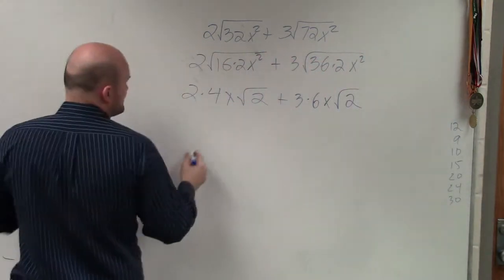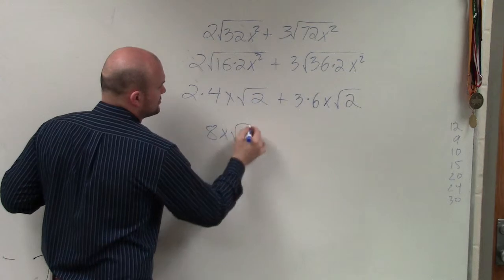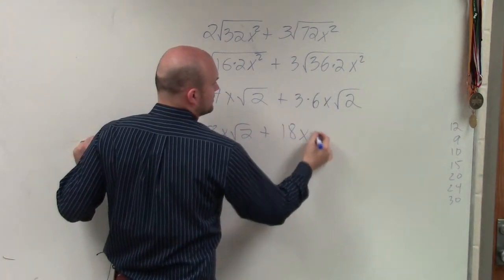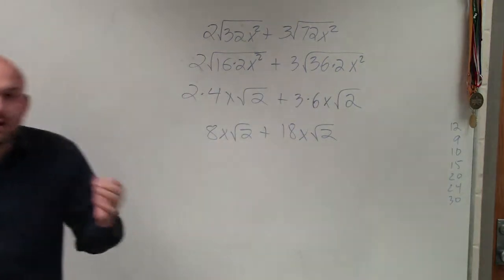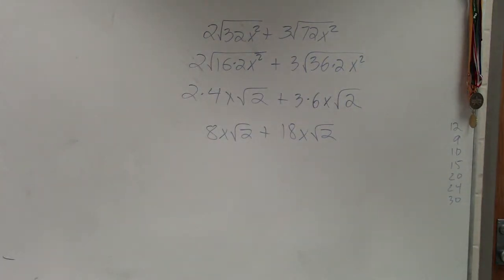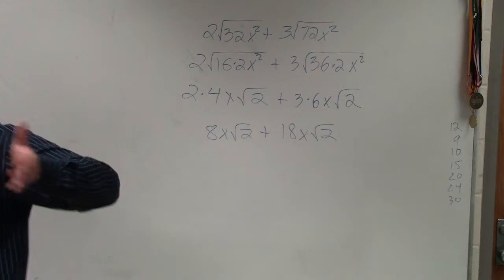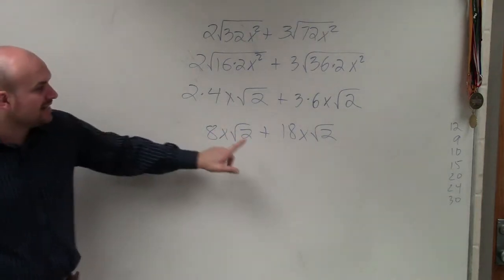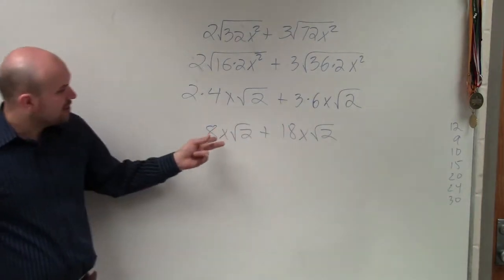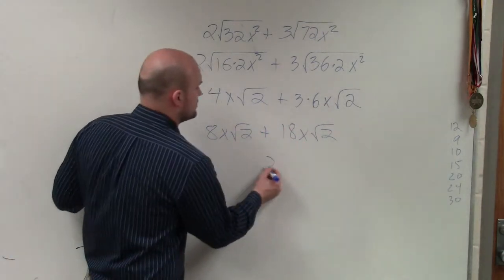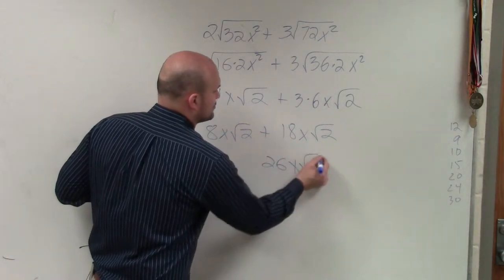So therefore, I have 2 times 4, which is 8x times square root of 2, plus 3 times 6, which is 18x times square root of 2. Now, when we're adding or subtracting, the main important thing is that the root has to have the same index. So since I'm both taking the square root and the radicand, which is just 2, is exactly the same, I can simply combine these two. So 8x plus 18x, those are like terms. So that's going to be 26x square root of 2.